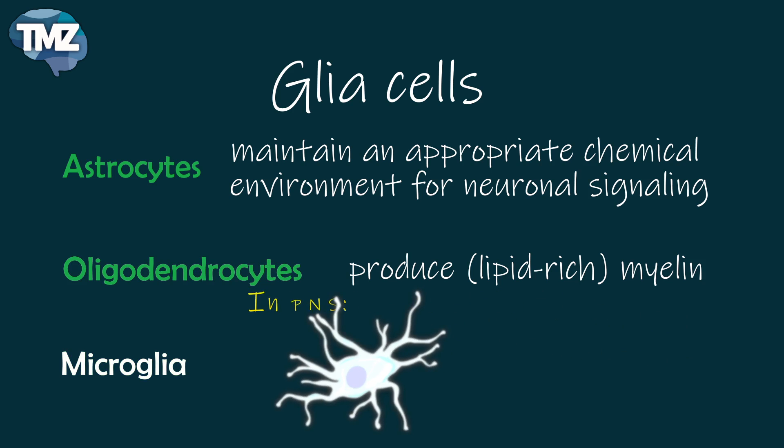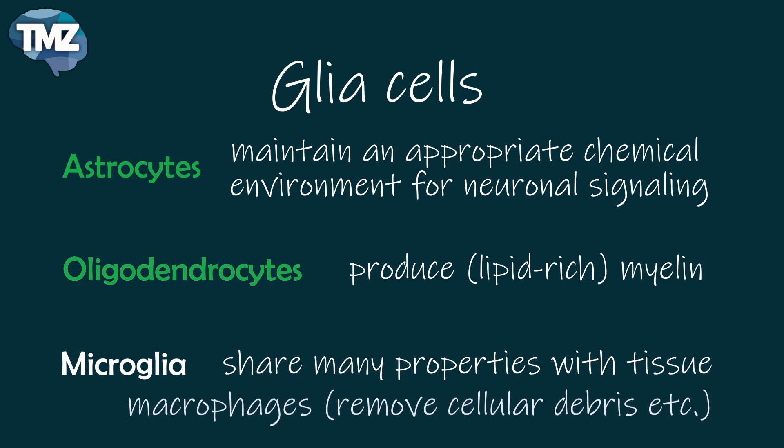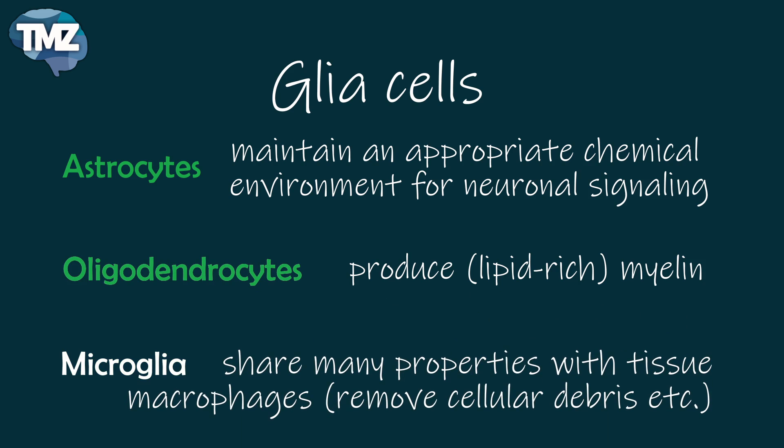Microglial cells are smaller cells. They share many properties with tissue macrophages and are primarily scavenger cells that remove cellular debris from sites of injury or normal cell turnover. Microglia are therefore sometimes classified as a type of macrophage. Following brain damage, the number of microglia at the site of the injury increases dramatically — some proliferate from microglia within the brain, while others come from macrophages that migrate to the injured area from the circulation.